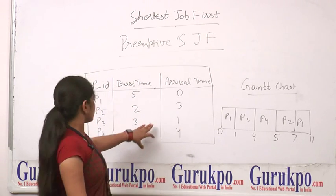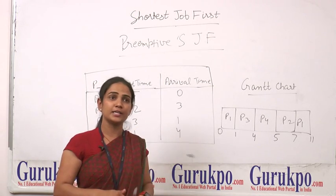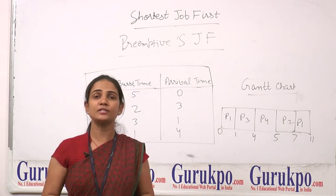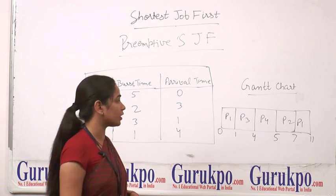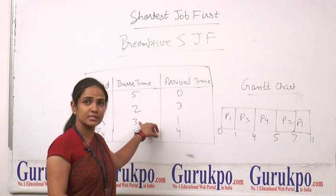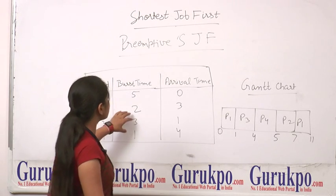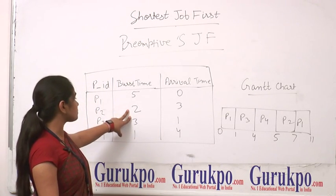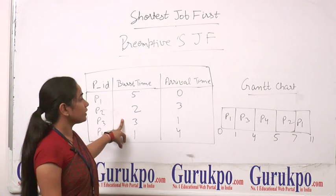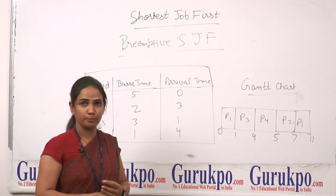Process P3 will use the processor until another process arrives in the ready queue. At arrival time 3, process P2 arrives. P3 continues until arrival time 3, but we can see that its burst time is less, and P3 completes its execution at time 4.